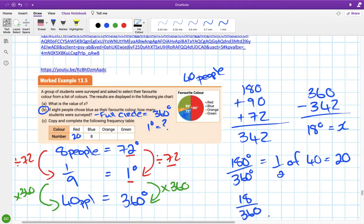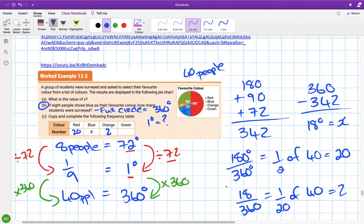18 degrees out of 360 is a twentieth. We're looking for one-twentieth of 40, which is two people.